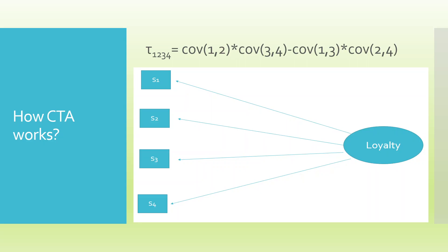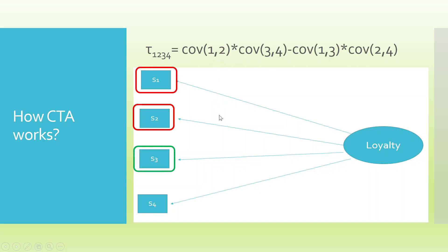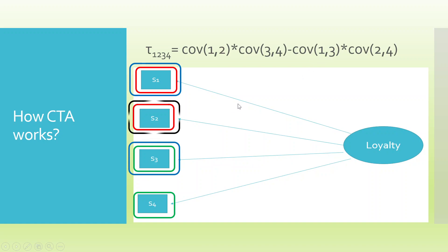The term 'tetrad' means four. CTA will only run when any construct consists of a minimum of four statements. It works on the concept of covariance: covariance(1,2) × covariance(3,4) minus covariance(1,3) × covariance(2,4). So the tetrad is calculated as: covariance of 1 and 2, multiplied by covariance of 3 and 4, minus covariance of 1 and 3, multiplied by covariance of 2 and 4.